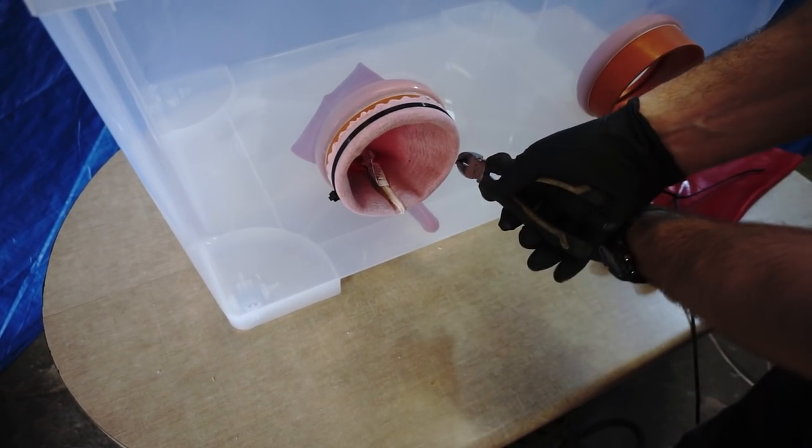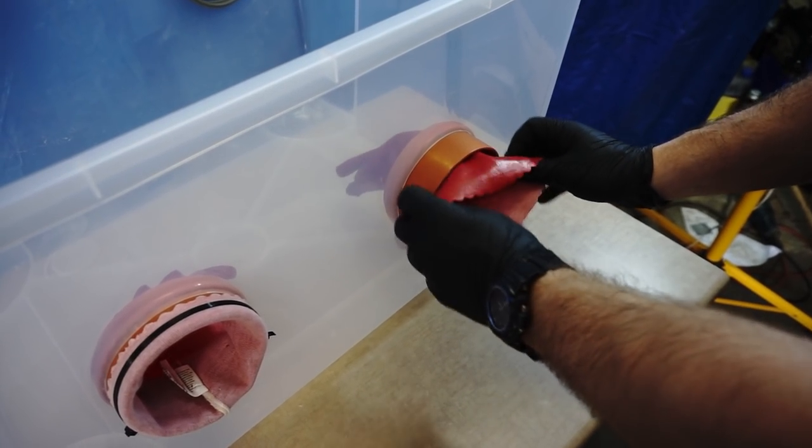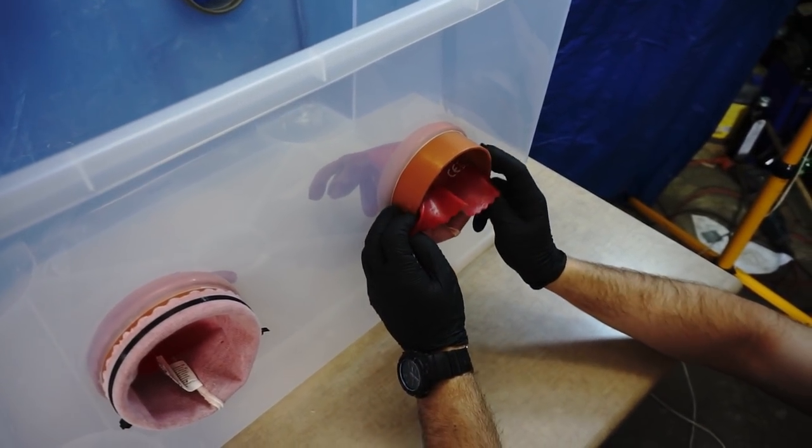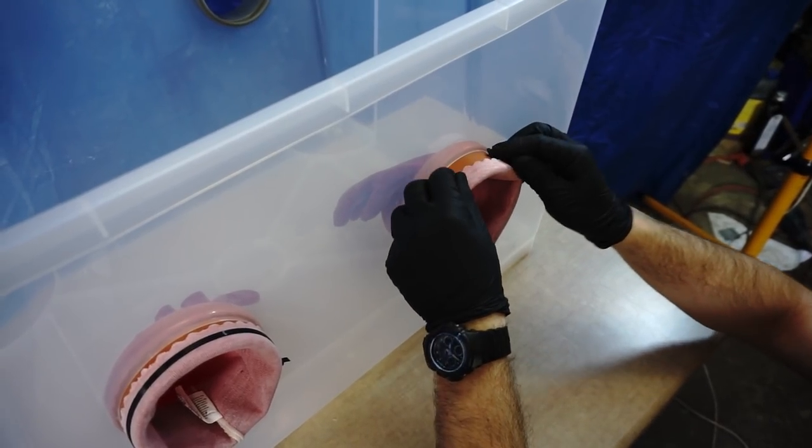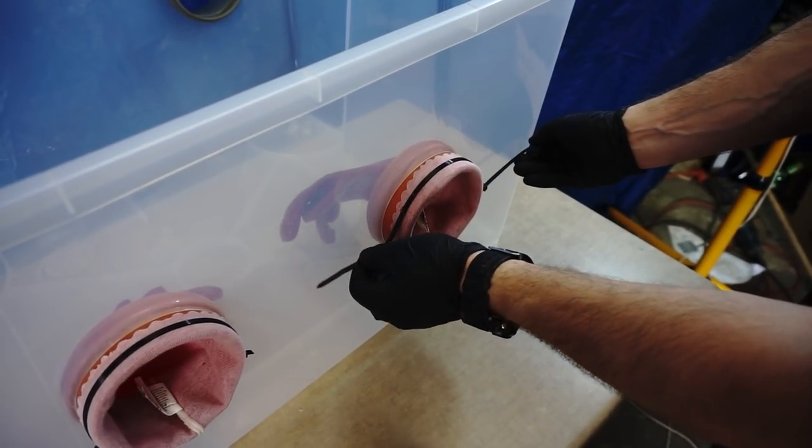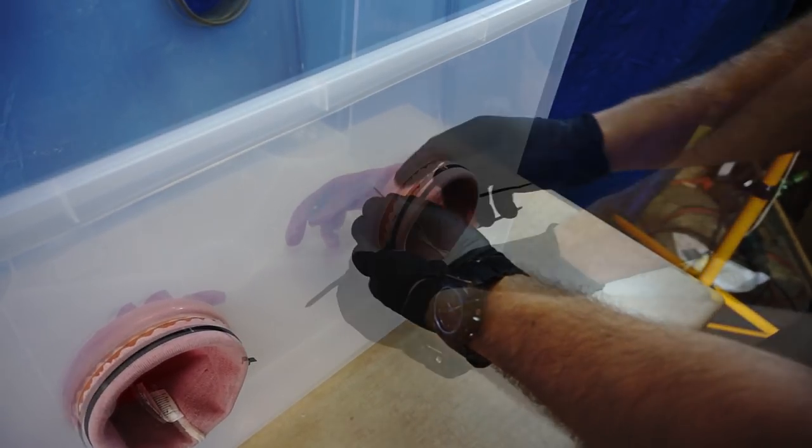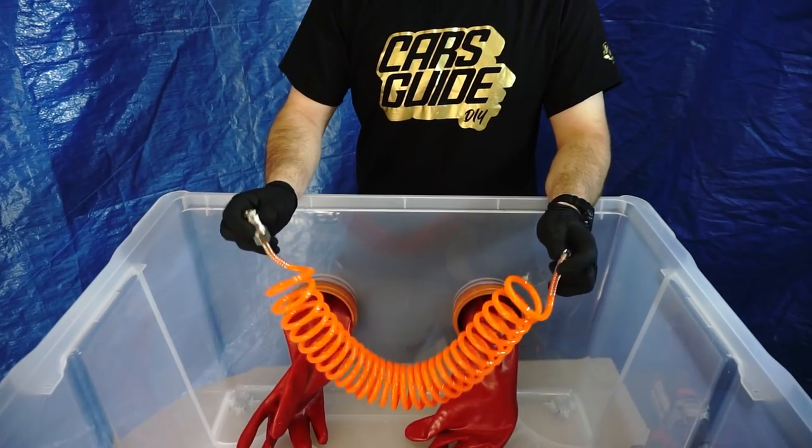Now do the same thing with the second glove. Perfect, done. We can proceed with the assembly of the flexible air hose.